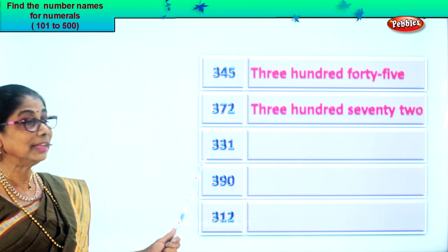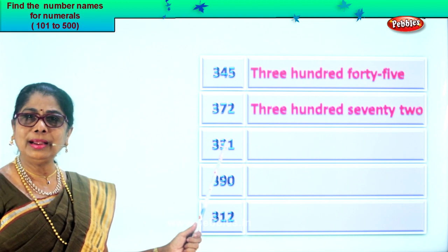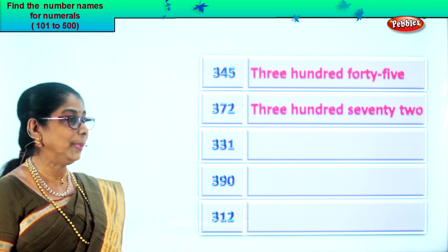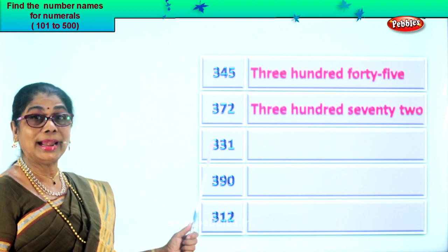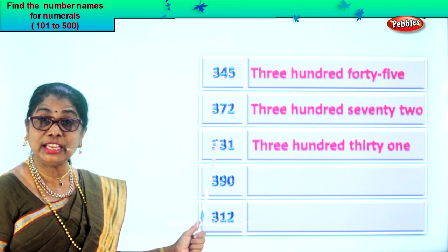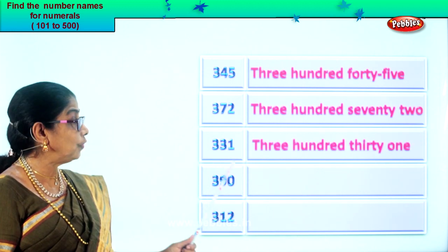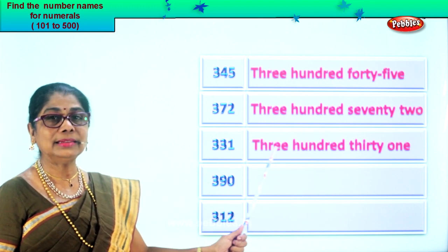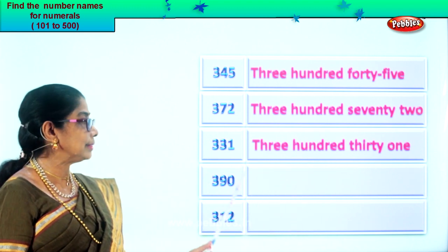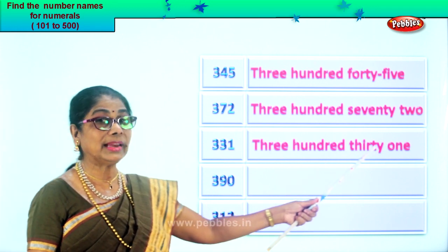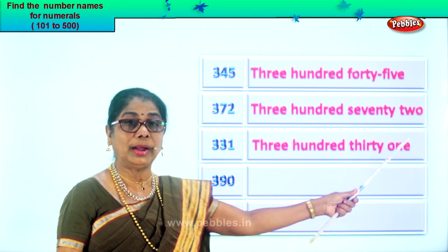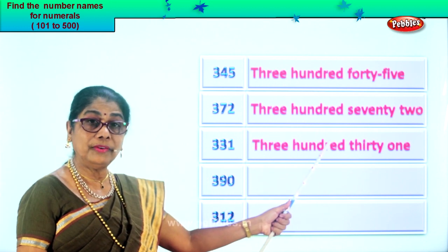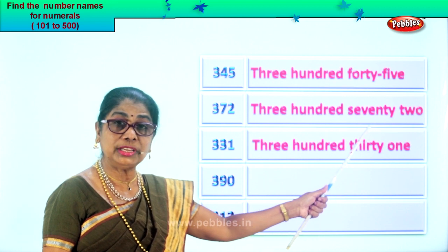Let's get on to our next numeral. You have one in the ones place, three in the tens, and three in the hundreds place — three, three, one. Three hundred thirty-one. So first we write three, next we write hundred, read three hundred. Next thirty-one, then we write thirty-one. The spelling of thirty should be correct.